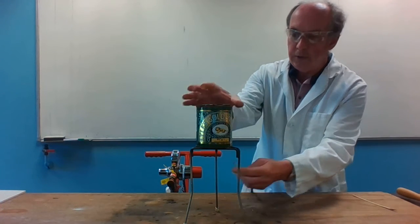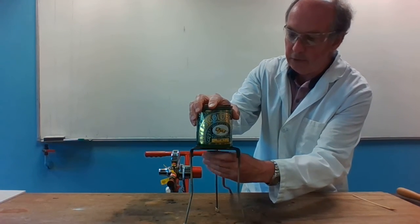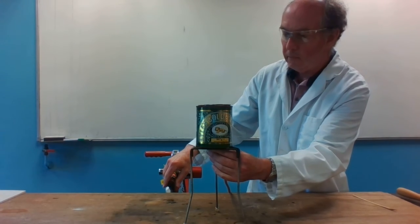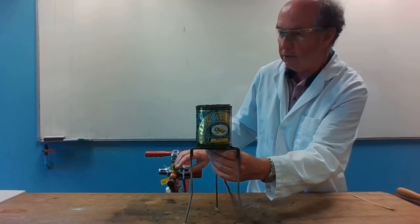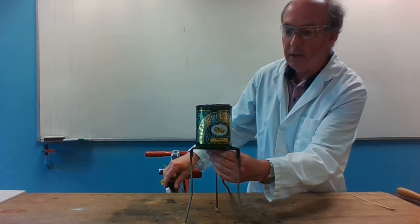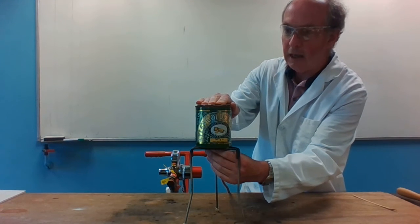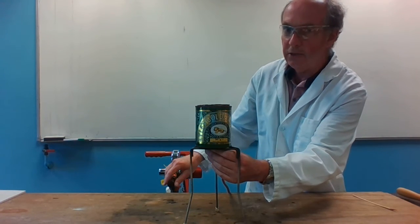I'm going to fill the tin up with hydrogen gas from the gas cylinder and then ignite the gas that comes out of the top of the tin. I want to make sure that it's full of hydrogen gas, that there's no air in there to start with.